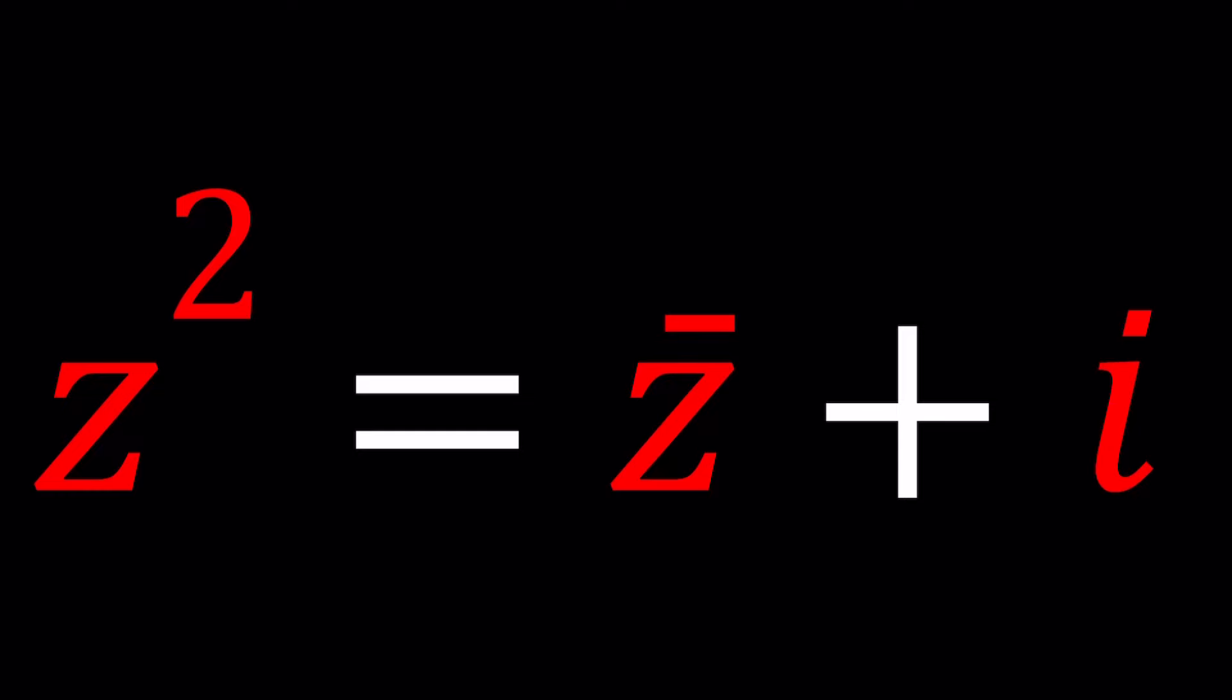We have z squared equals z bar plus i. z bar is defined as the complex conjugate of z which I'm going to define in a little bit, and z squared is just z to the second power, and i is our imaginary unit.